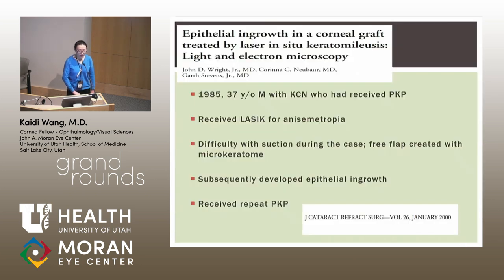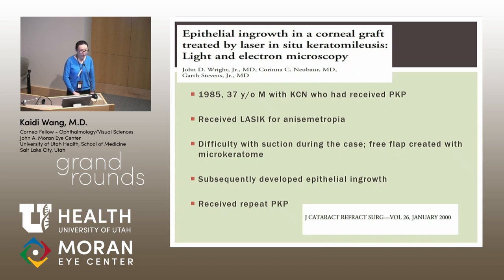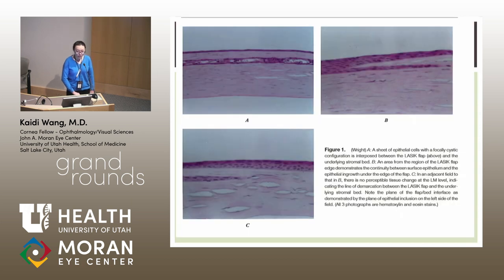After the advent of LASIK, there started becoming case reports of epithelial ingrowth in LASIK flaps. We actually have pathology from some of these samples as well. In this case, a 37-year-old man with keratoconus who in 1985 had received PKP, but then received LASIK over that PKP for anisometropia. There was difficulty with suction during the case and a free flap was created with a microkeratome. He subsequently developed epithelial ingrowth in that LASIK flap and then received a repeat PKP. On the pathology slides you can see sheets of cystic epithelial cells that actually connect with the flap edge.